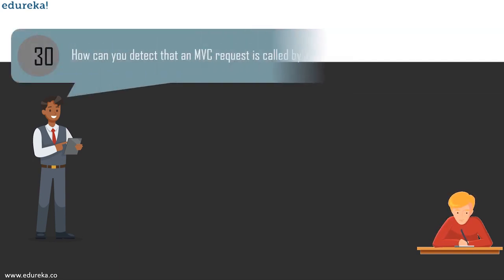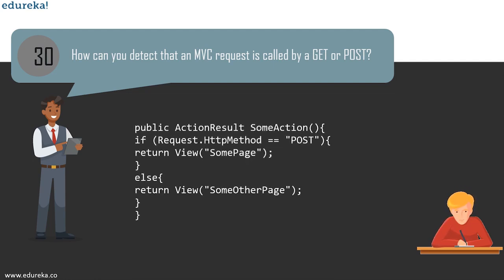The next question is: how can we detect that an MVC controller is called by GET or POST? To detect if a call on the controller is a GET or POST action, we can use the Request.HttpMethod property. In the code, there is a method called ActionResult SomeAction — in an if condition, we check if Request.HTTP equals POST; if so, it returns the view of that page, otherwise it returns the view of some other page. By this, you can understand whether the request is GET or POST.